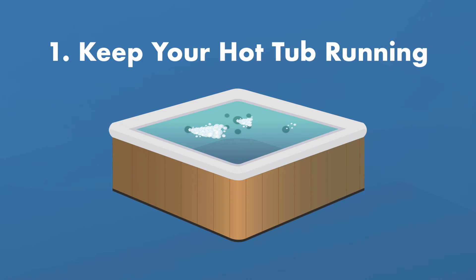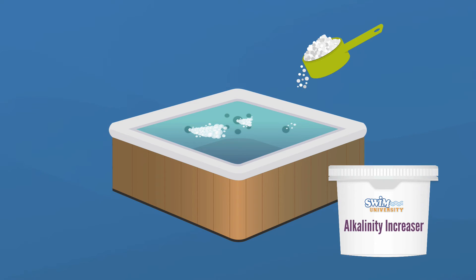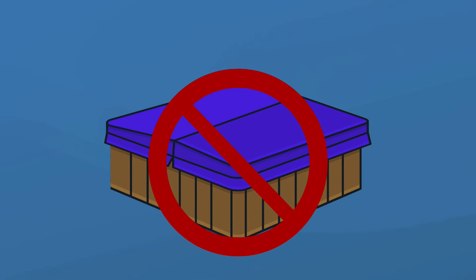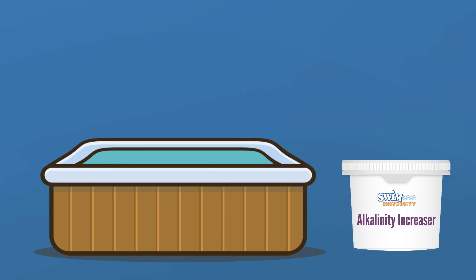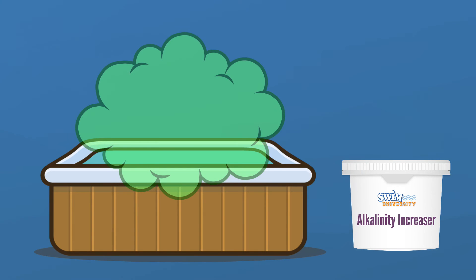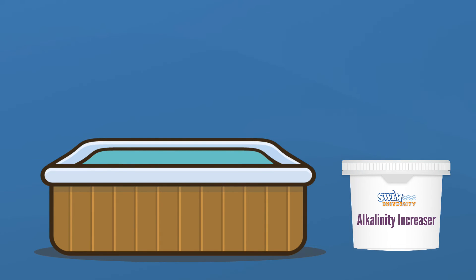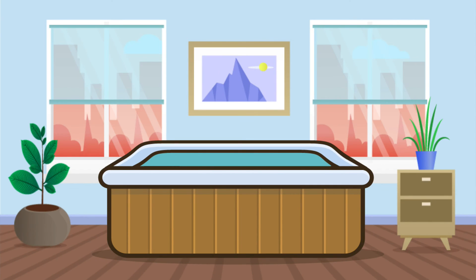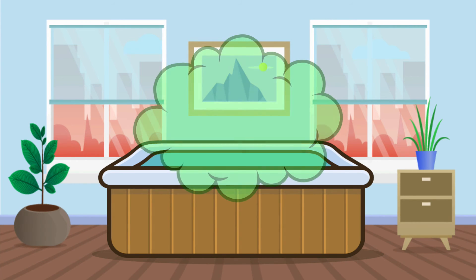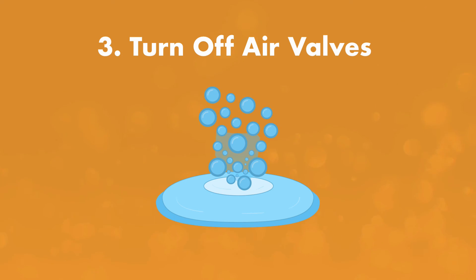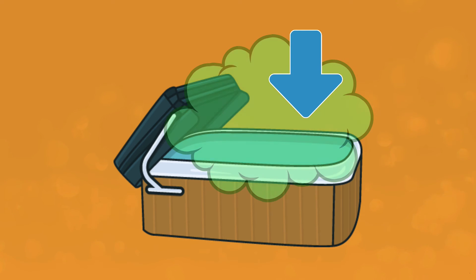Now that you know what chemicals to add, let's go over how to add them. First, keep the hot tub running when you add chemicals — the jets will mix everything into the water. Once you add the chemicals, do not cover your hot tub. You might have heard this is a good idea to prevent evaporation, but right after you add chemicals they need to gas off, meaning a portion of the chemicals will be released into the air. If your hot tub is indoors, open a window or turn on a ventilation fan so those gases don't hang around. Also, if your hot tub has air valves that increase jet pressure, turn them off — you don't want off-gassing to happen too quickly, or too much of the chemicals will escape.